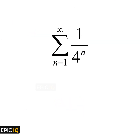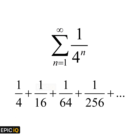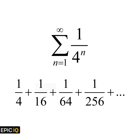What you see here is one of the simplest geometric series. It is the sum of 1/4 to the power n, where n goes from 1 to infinity. And if we write the first few terms of this sum, it would be 1/4 plus 1/16 plus 1/64 plus 1/256, and so on.